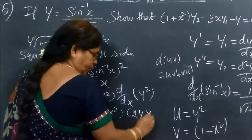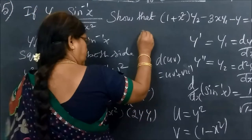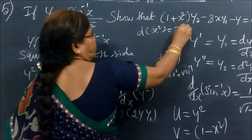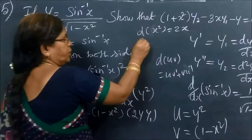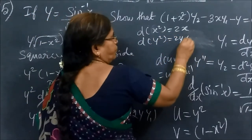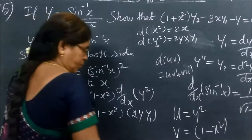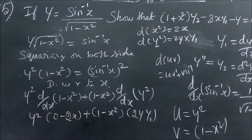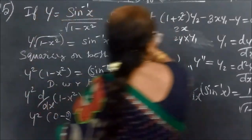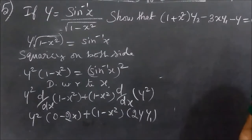Plus 1 minus X square, differentiation gives 2Y into Y1. Then 1 minus X square, and we are writing Y1 — that is dY/dX — because in the question it is given Y1 only.